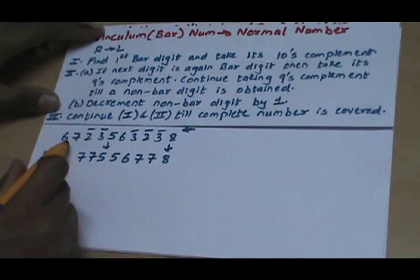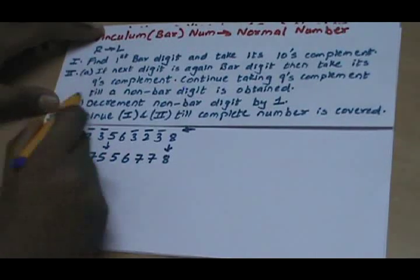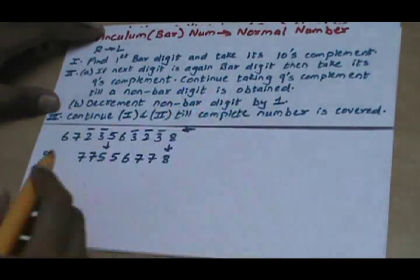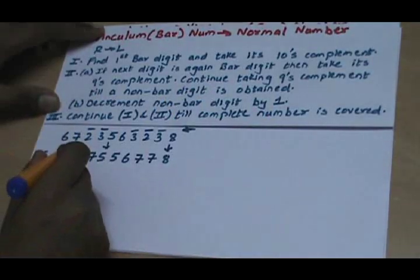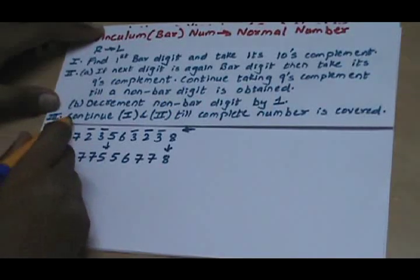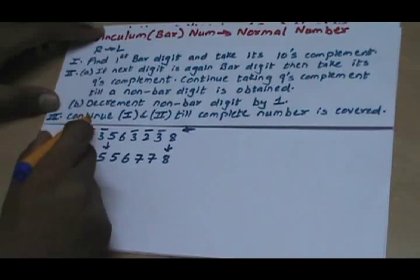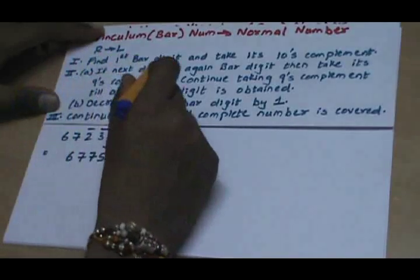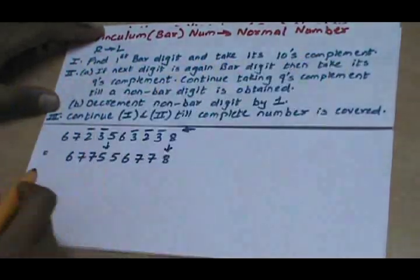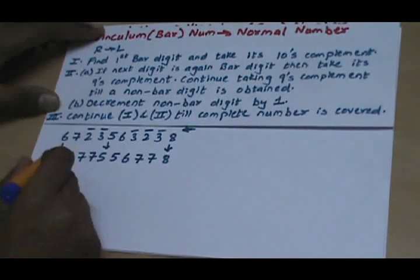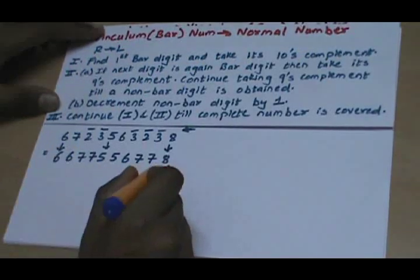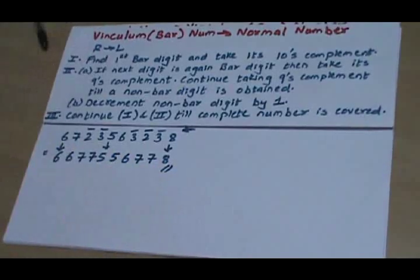As the next digit is a non-bar digit, we decrement it by 1, giving 6. Continuing Step 1 again, there are no bar digits remaining, so we write 6 as it is. This is your converted normal number.